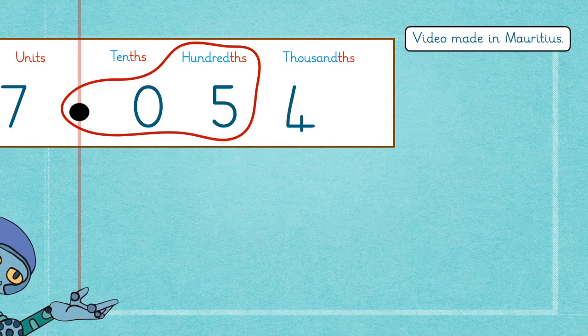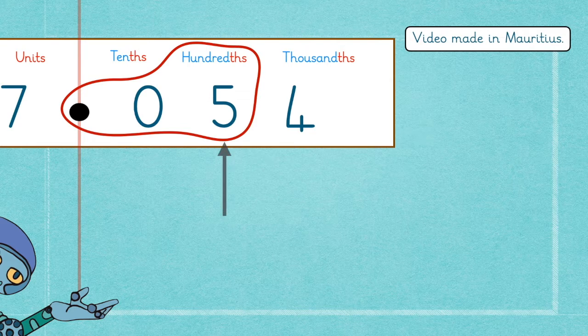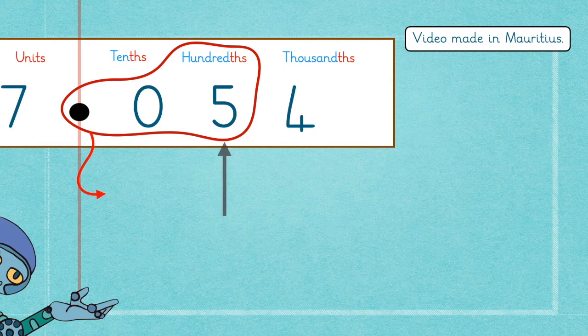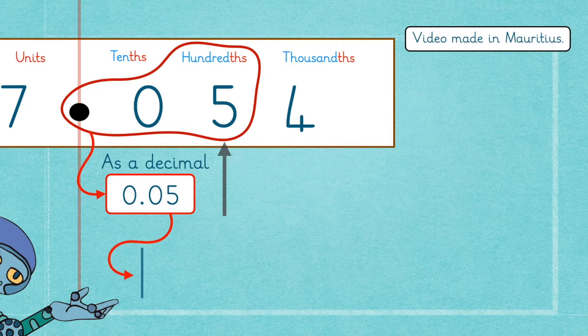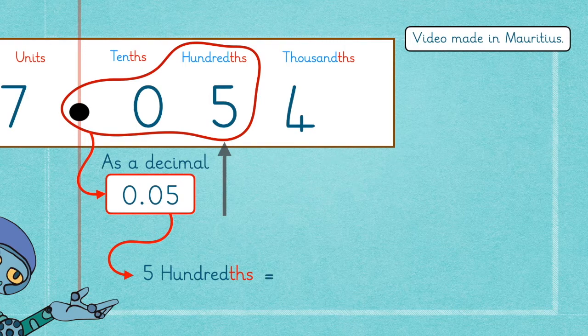Now, if we look at 5 hundredths, you will see that it is in fact 0.05 in the decimal form. So 0.05 is the same as 5 hundredths, which is 5 out of 100.